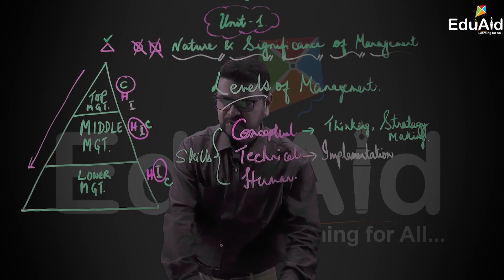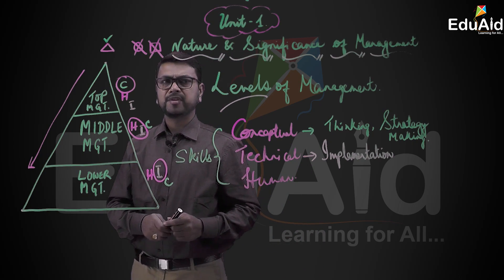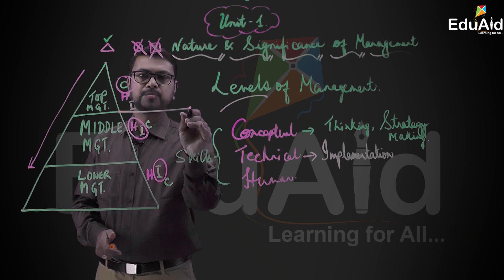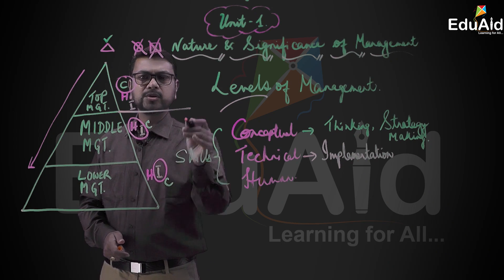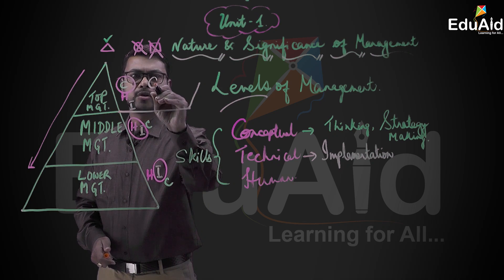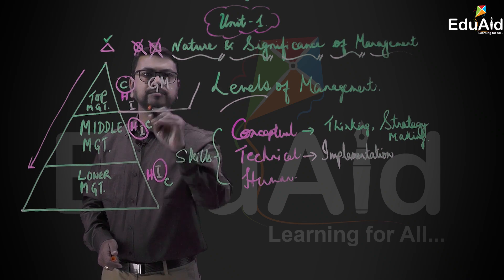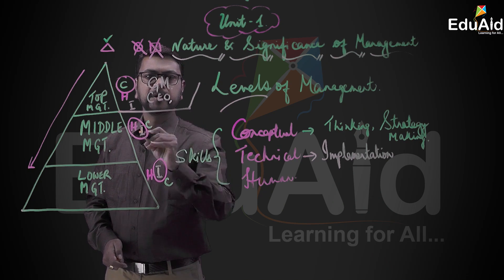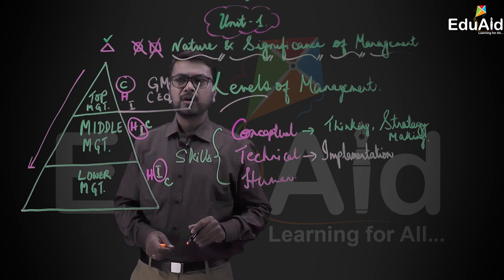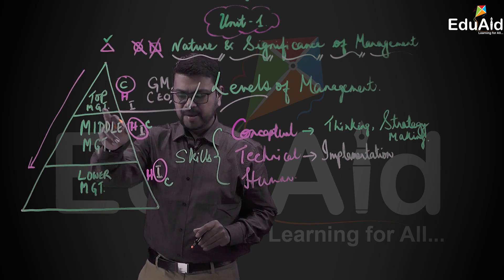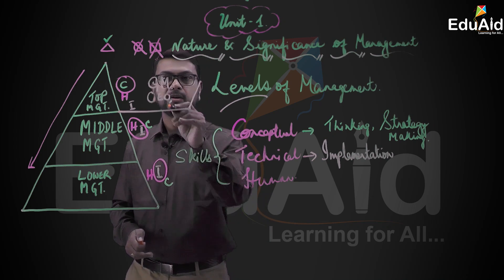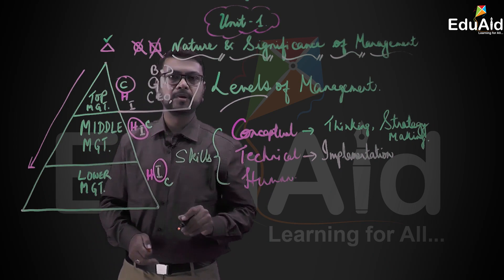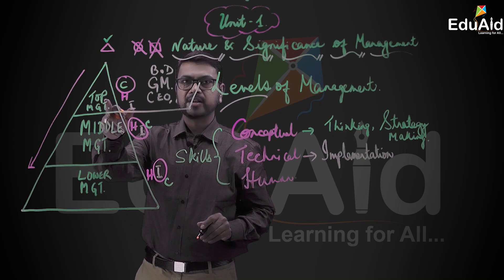Let us understand some of the people concerned with each position. For example, at the top level management you have: General Manager, CEO, DGM, and Board of Directors. These are all people who are part of the top level management.